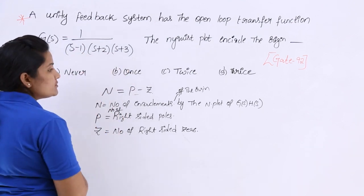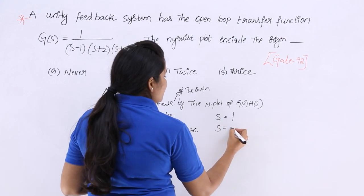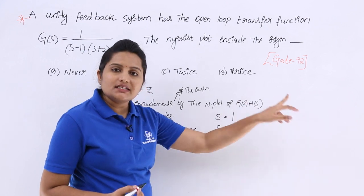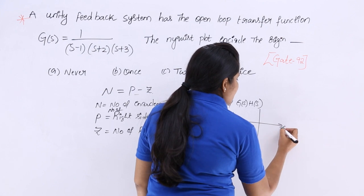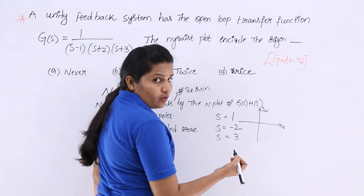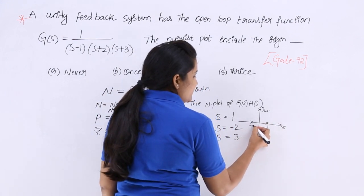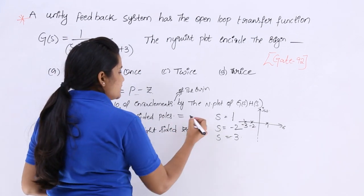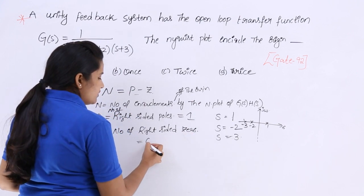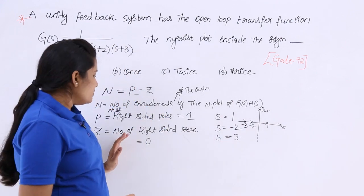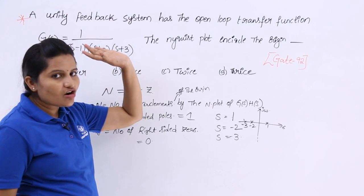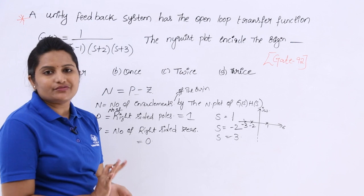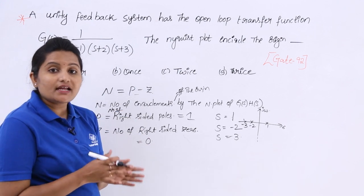In the s-plane, with the real axis and imaginary axis, one pole at s = 1 lies in the right half of the s-plane, while the remaining two poles (s = -2 and s = -3) are in the left half. There are no zeros because the numerator is just 1, so the number of right-sided zeros is zero.